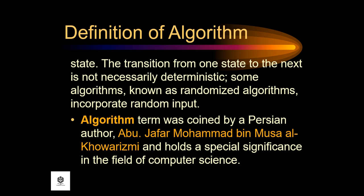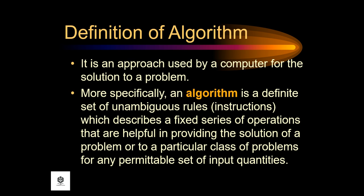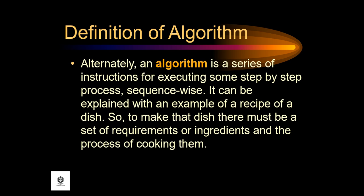The algorithm term is coined by a Persian author, Abu Jafar Muhammad bin Musa al-Khwarizmi, and holds a special significance in the field of computer science. It is an approach used by a computer for the solution to a problem. More specifically, an algorithm is a definite set of unambiguous rules or instructions, which describes a fixed series of operations that are helpful in providing the solution of a problem for any permissible set of input quantities. Alternately, an algorithm is a series of instructions for executing some step-by-step process sequence-wise.